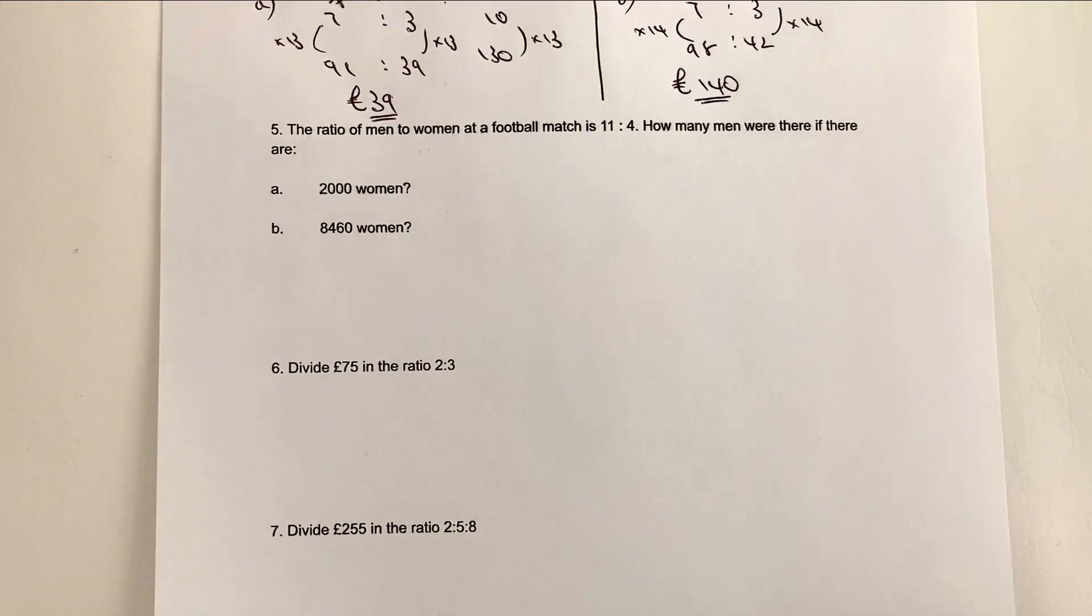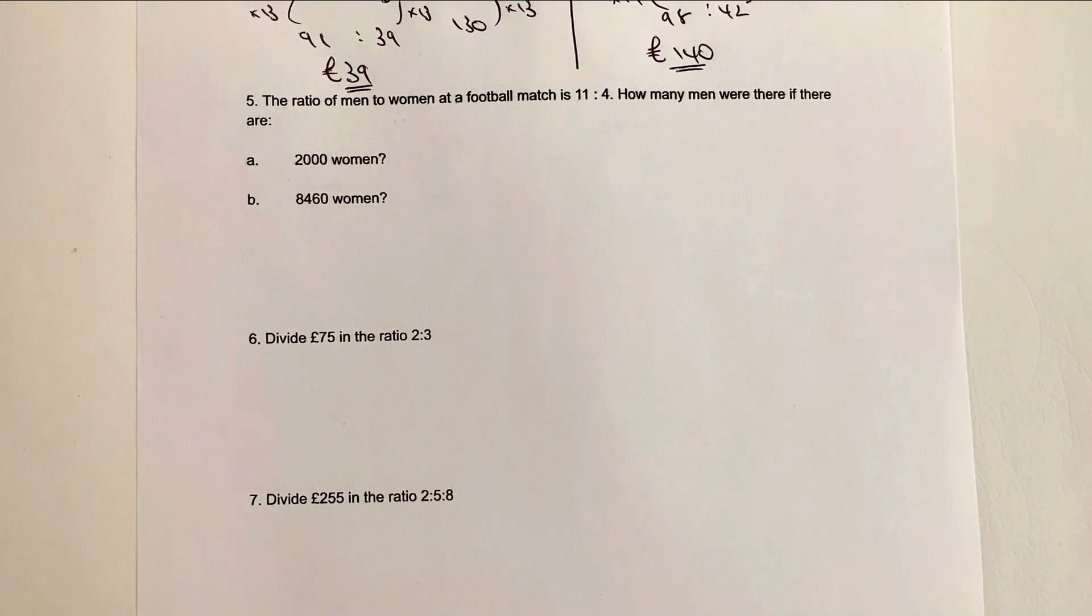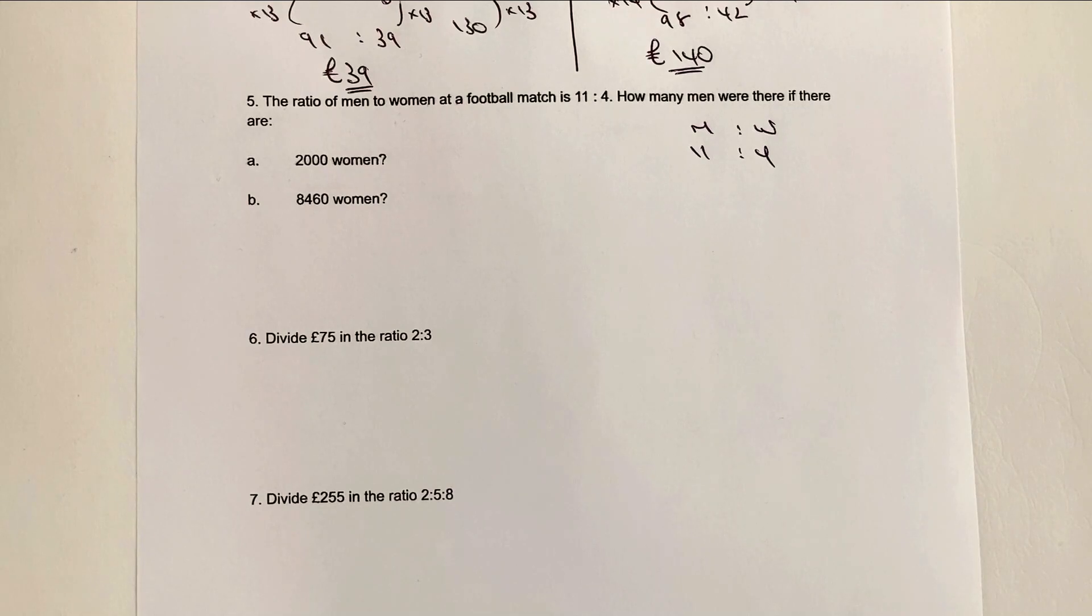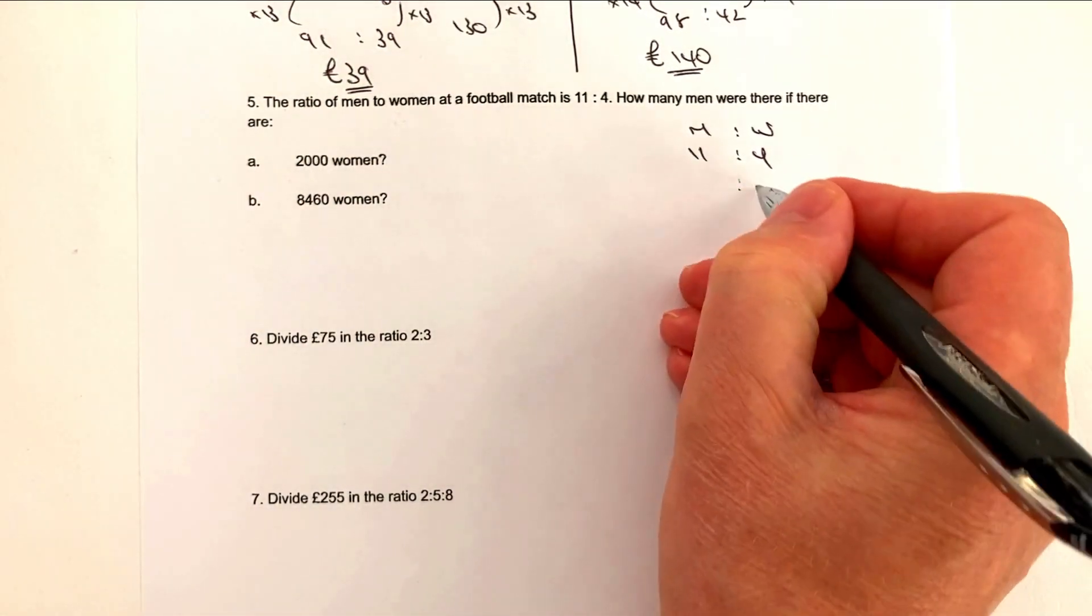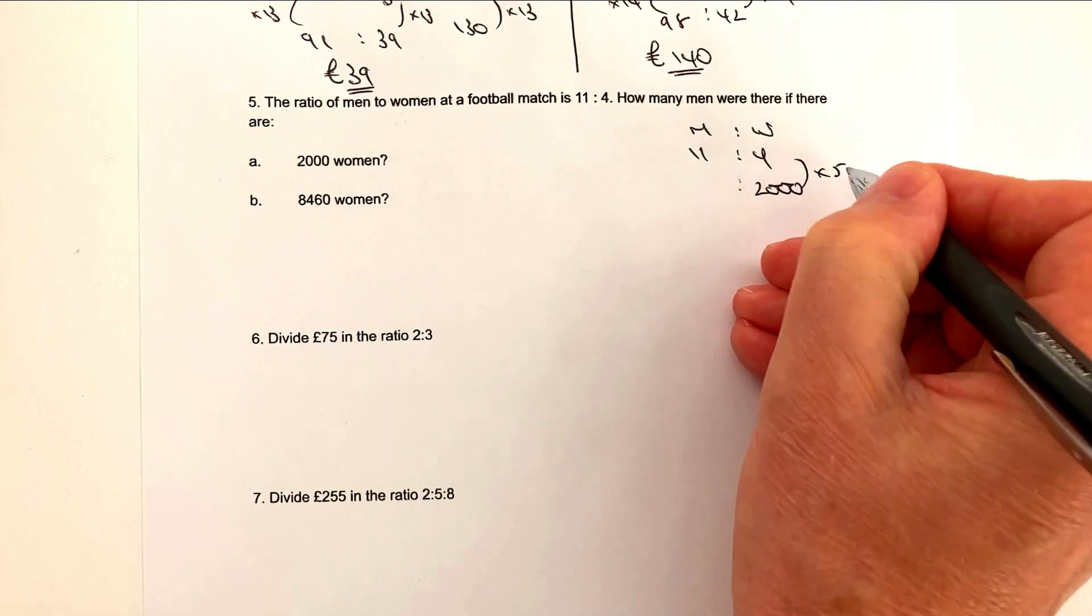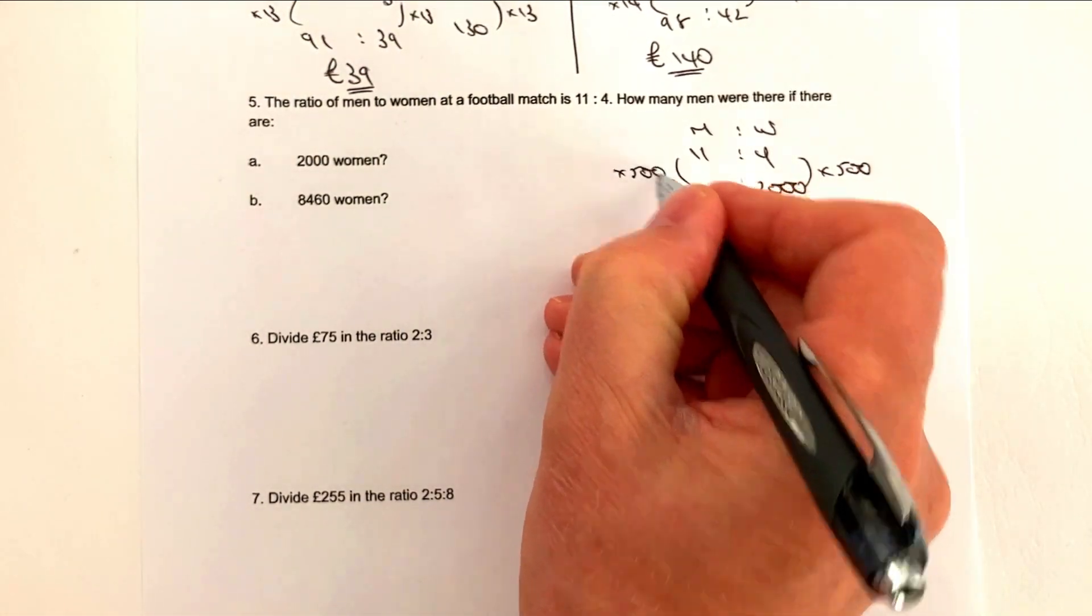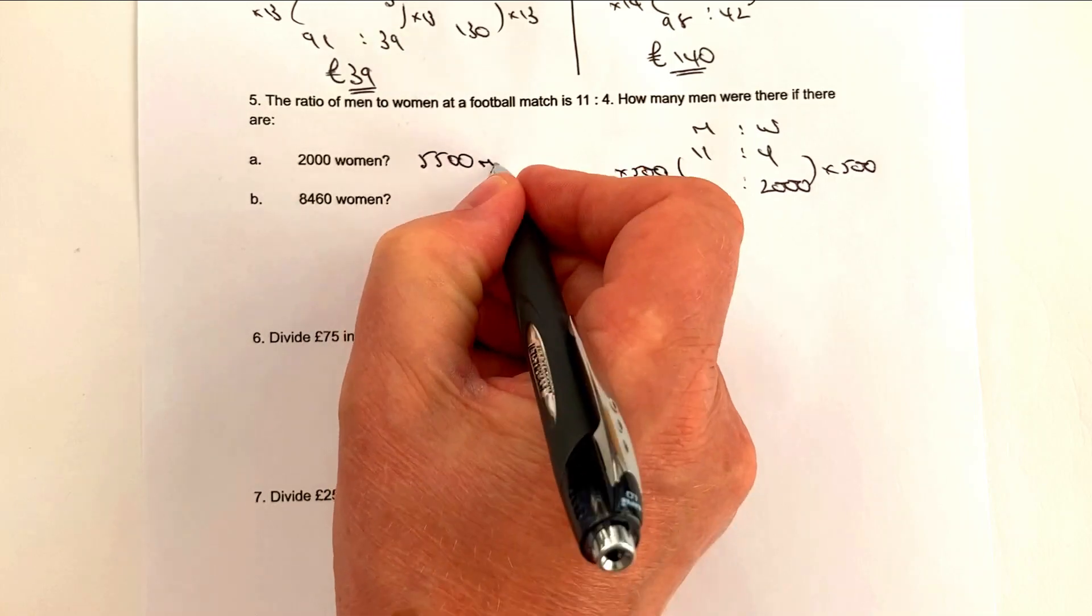Let's have a look at number 5. Now, arguably, number 5 is going to be a calculator-type question because the numbers are a little bit bigger. But you might find this cropping up in a non-calculator. It gives you good arithmetic practice. So we've got men to women. And it's in the ratio 11 to 4. And that's our baseline. So if 15 people went to the football match, 11 of them would be men and 4 of them would be women. But in this particular case, we've got 2,000 women. So if it's 2,000, what we're saying is that that's basically 500 times bigger than 4. So therefore, we multiply the other side by 500, and we're going to get 5,500. So in this particular case, it'd be 5,500 men.